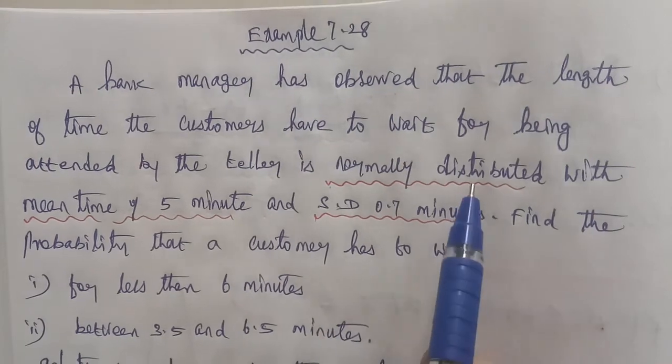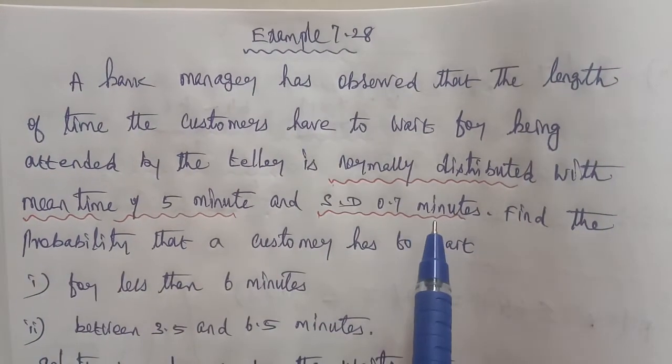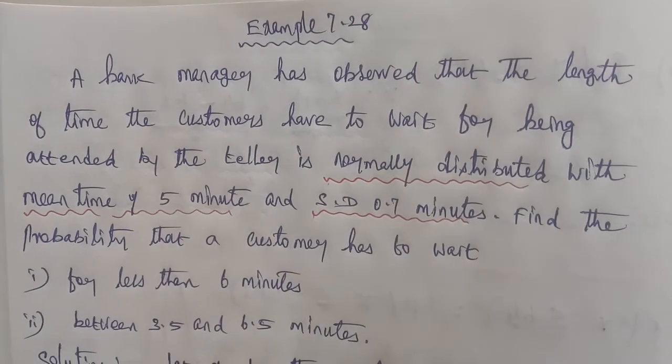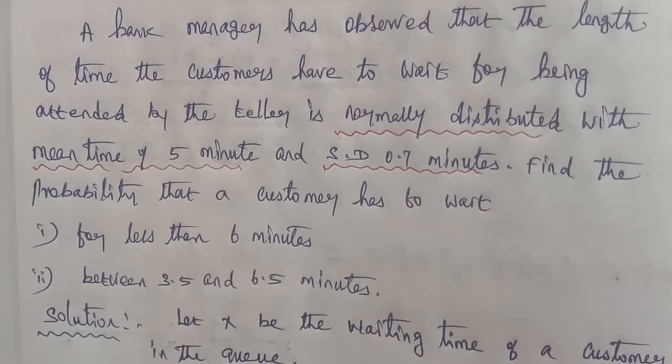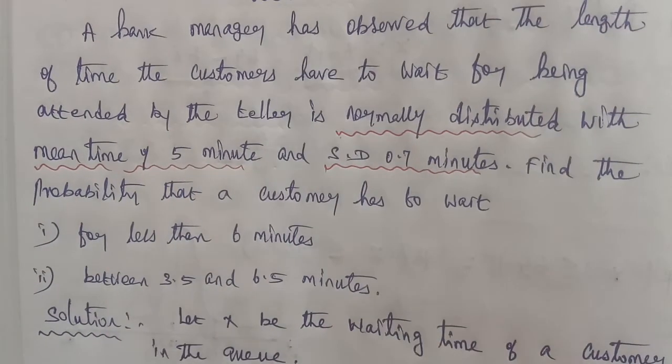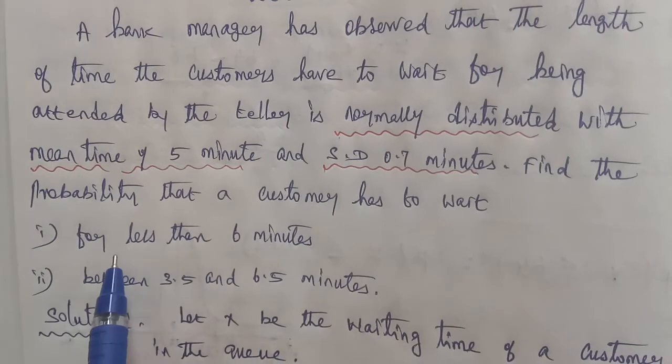The given question is a normal distribution problem, with mean value μ and standard deviation σ. Let X be the waiting time of the customer in the queue. The given values are μ = 5 and σ = 0.7.